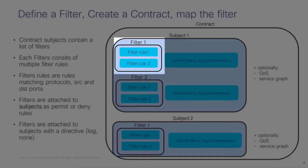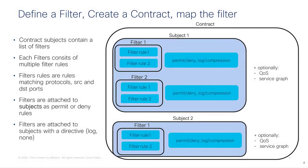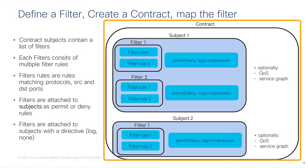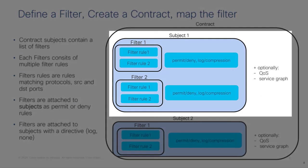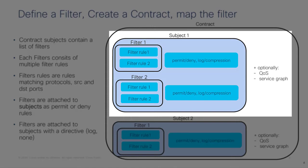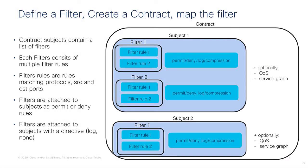Those two rules together constitute the filter. When you associate this filter to the contract, you do so by defining a subject. The subject is a collection of filters. At the filter level, you define whether the action is permit, deny, permit-plus-log, or deny-plus-log, and whether TCAM compression is in place. At the subject level, you define whether a service graph is associated or the quality of service to apply. You could have multiple contracts each with a single subject, or one contract with many subjects — from a data plane perspective they are absolutely equivalent.